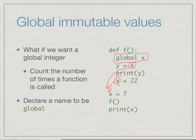All x's referred to in f are actually the same as the x outside and to be treated as global values. So this is one way in which we can make an immutable value accessible globally within a Python program.